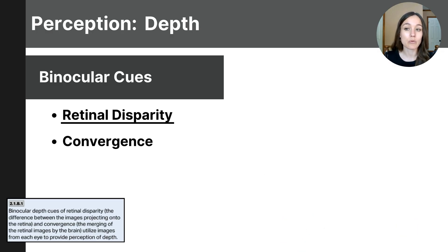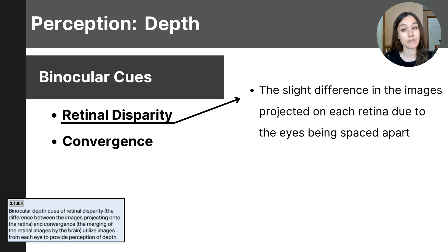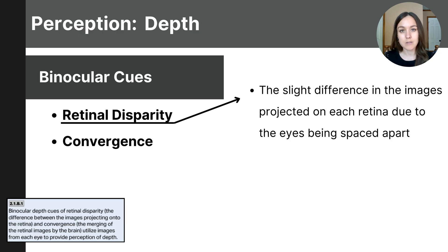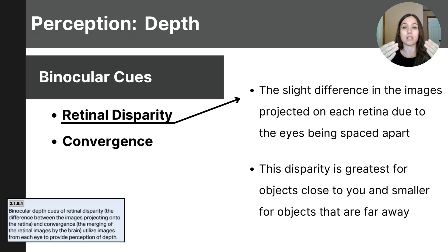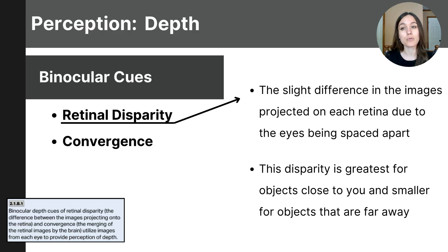Our eyes are about six to seven centimeters apart, giving them slightly different views on the same object. The difference between these images is called retinal disparity, and it is a key factor in how the brain calculates depth. Retinal disparity refers to the slight difference in the images projected on each retina due to the eyes being spaced apart. This disparity is greatest for objects that are closer to you and becomes smaller as objects move farther away. The brain combines these slightly different images to perceive depth, making retinal disparity a critical binocular cue.